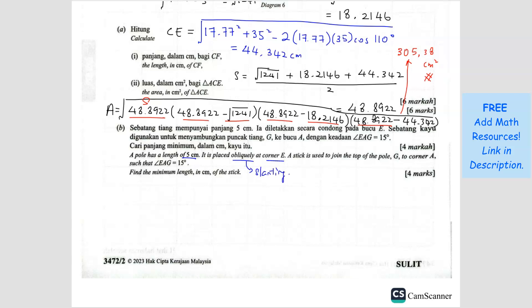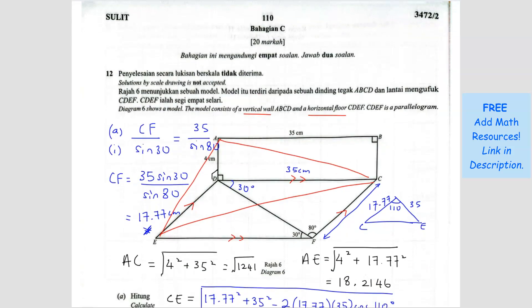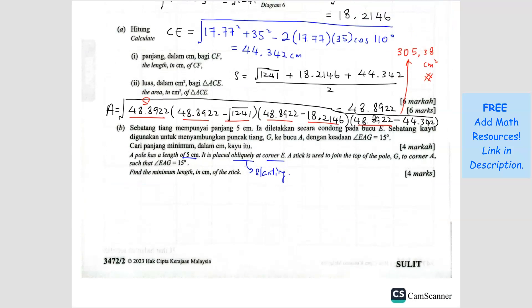If it is slanting and it is at corner E, it's going to be somewhere here. So you got point E here, the corner E is here. You got a stick that is 5 cm long, but this 5 cm is not straight because it is oblique. So that means you can either face...